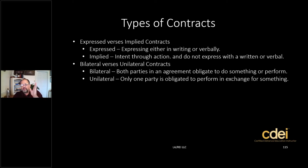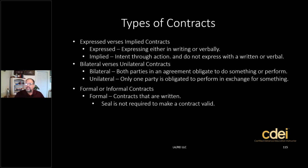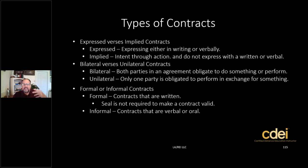We've covered expressed versus implied and bilateral versus unilateral. Now there are two more terms: formal and informal contracts. A formal contract is simply a contract that's written. In Louisiana and many states, according to the statutes of fraud, certain real estate contracts must be in writing to be enforceable in a court of law. There doesn't need to be a seal on the contract to make it valid. An informal contract is typically verbal or oral — so if you see a test question about an informal contract, it's referring to a verbal or oral agreement.